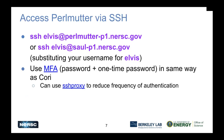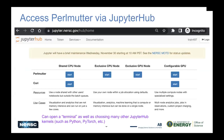How to access Perlmutter? You would do SSH to your username at perlmutter-p1.nersc.gov, or your username at saul-p1.nersc.gov. Saul is the first name of Perlmutter, just for easy typing. You would use MFA with multi-factor authentication — password plus one-time password — the same way as you do on CORI. You could also use SSH proxy to reduce the frequency of authentication; the default time is 24 hours, so you don't have to type your password again and again if you're logging in multiple times during the day. Many people also use JupyterHub to access Perlmutter.